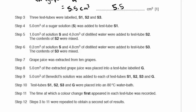Continuing with the investigation. Step 3: three test tubes were labeled S1, S2, and S3. 5 centimeters cubed of sugar solution S was added to S1. 1 centimeter cubed of solution S and 4 centimeters cubed of distilled water were added to S2 and mixed. 0.2 centimeters cubed of solution S and 4.8 centimeters cubed of distilled water were added to S3 and mixed. Grape juice was extracted from 10 grapes. 5 centimeters cubed of extracted grape juice was placed into test tube G. 5 centimeters cubed of Benedict's solution was added to each of S1, S2, S3, and G. They were placed into an 80°C water bath, and the time at which a color change first appeared was recorded. Steps were repeated to obtain a second set of results.